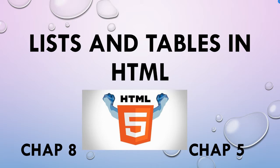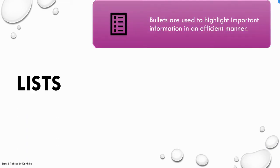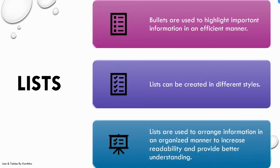First, we'll be learning about how to create lists. A list is used when you are displaying some important information or highlighting it using bullets. Bullets are used to highlight important information in an efficient manner and can be created in different styles. Lists are used to arrange information in an organized manner to increase readability and provide better understanding. Instead of giving a paragraph, if you give a list, it will reach the reader more quickly.